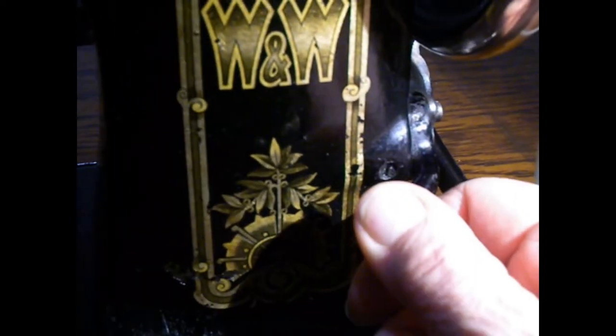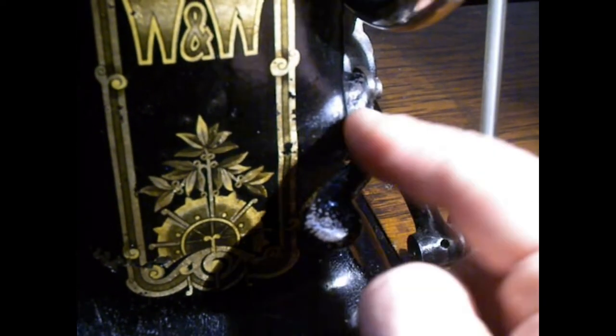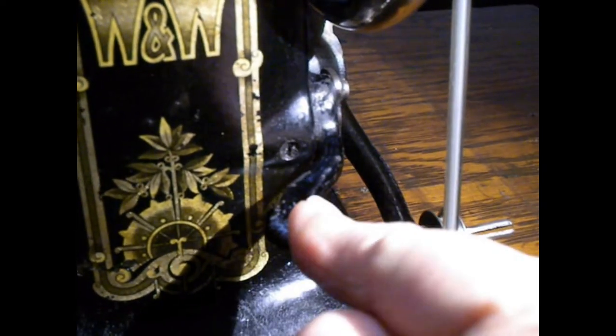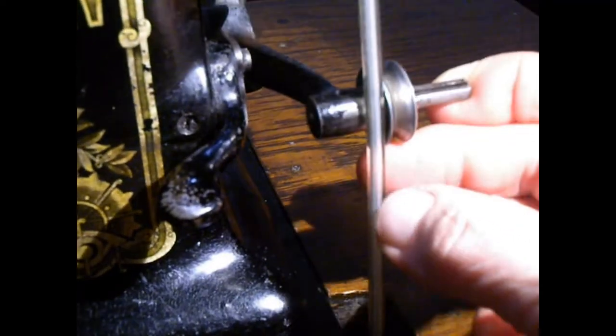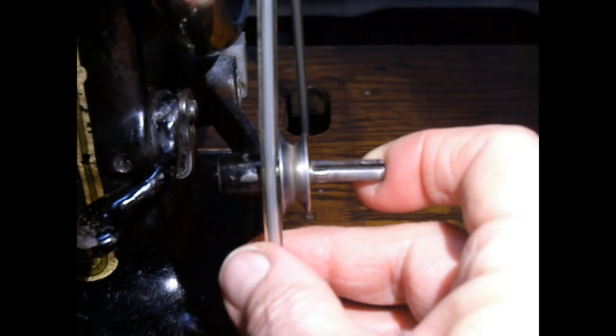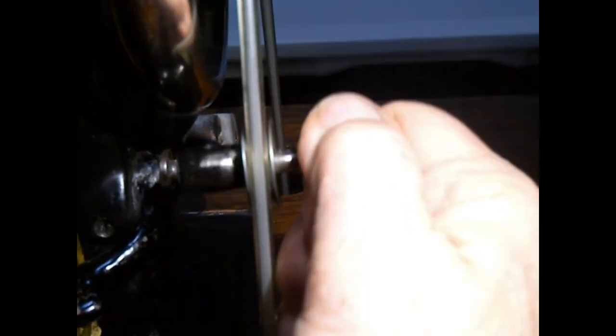This is the stitch length regulator here. All the way down is that big stitch, all the way up is the reverse, so about in the middle is your typical stitch length. The bobbin winder's right there—you just put it on your treadle belt and wind your bobbin.